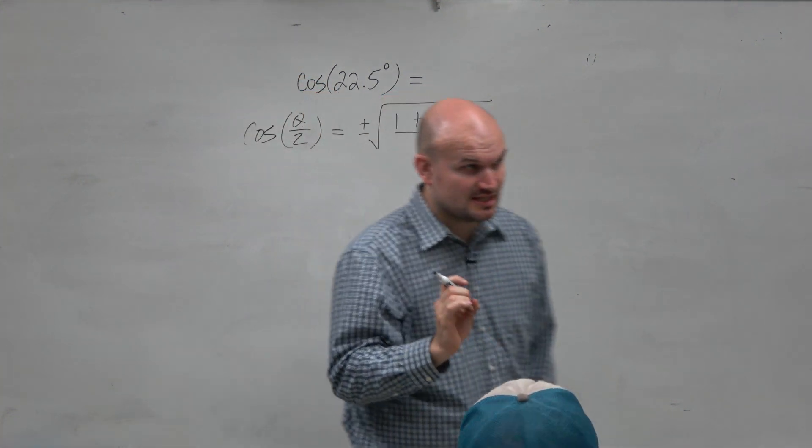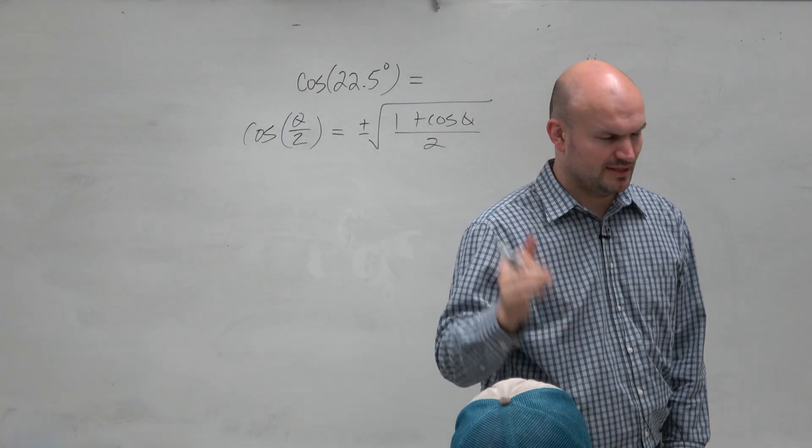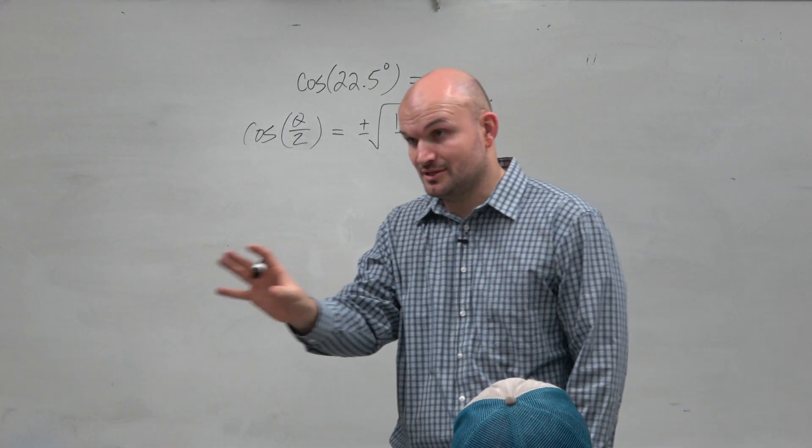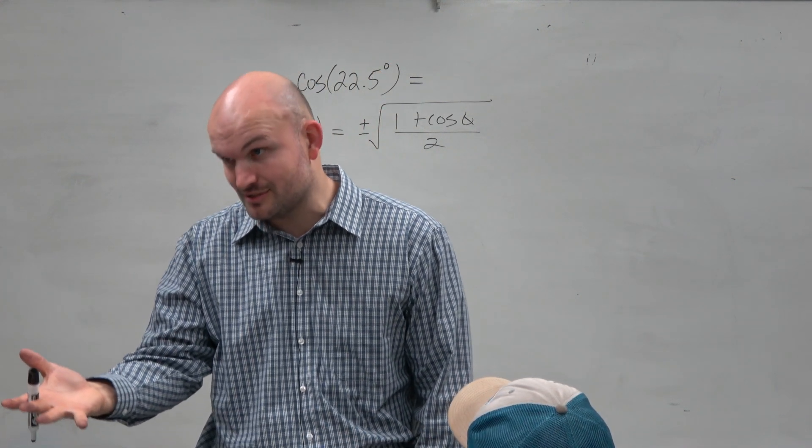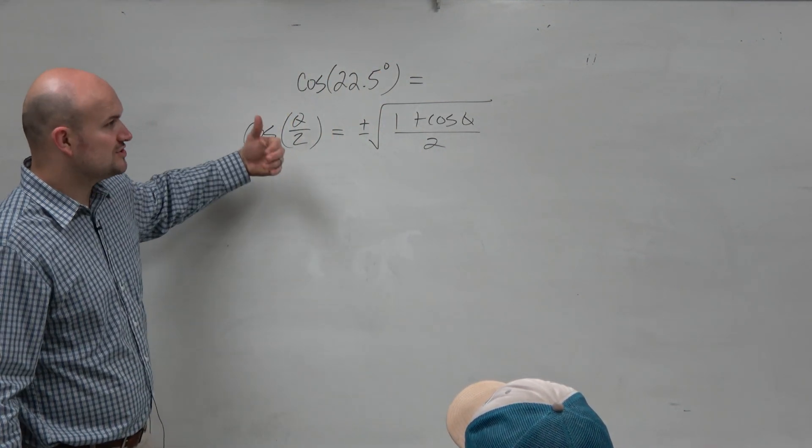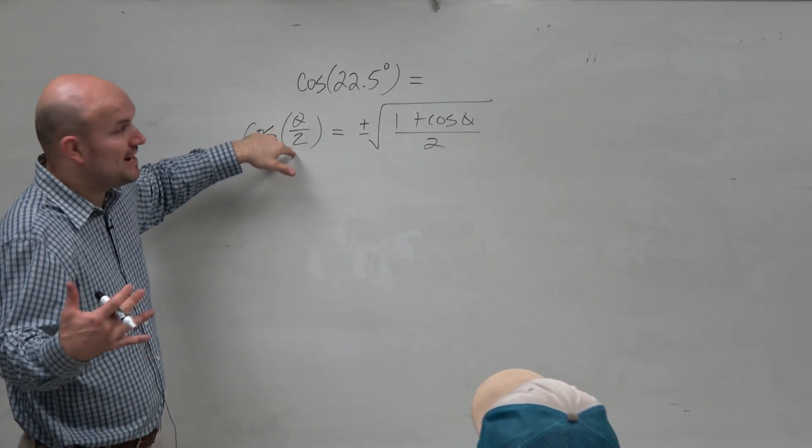Now, there's some interesting things on this formula. It is not plus or minus. You said it's plus or minus? No, it's not plus or minus. So don't write plus or minus. Because if you're writing plus or minus, then I know you're not paying attention. So don't write plus or minus. The plus or minus refers to where the angle theta over 2 is. In which quadrant? Is that positive or negative?